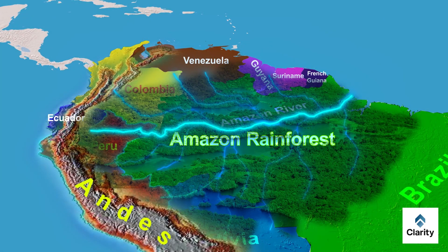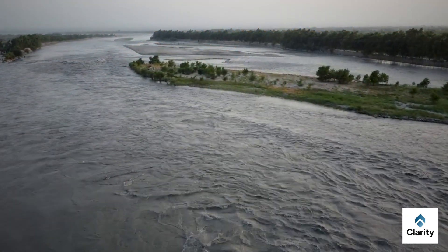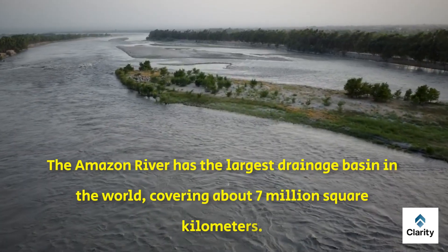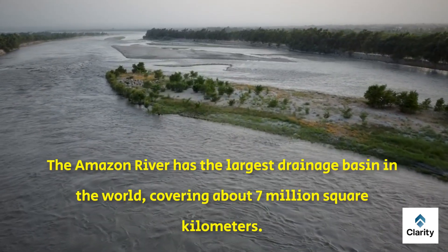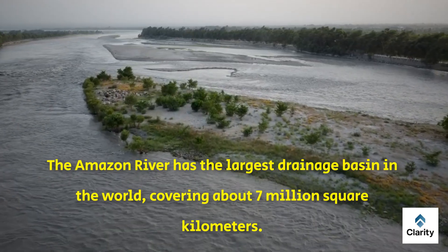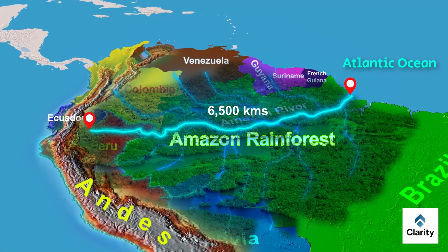Flowing through this forest is the mighty Amazon River. It is about 6,500 kilometers long, making it the second longest river in the world after the Nile. However, it is the largest river in the world by volume of water. The Amazon River has the largest drainage basin in the world, covering about 7 million square kilometers. Its mouth is so wide that fresh water can be detected far into the Atlantic Ocean.